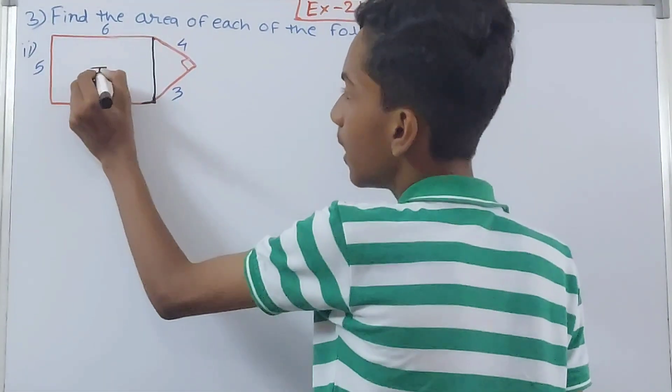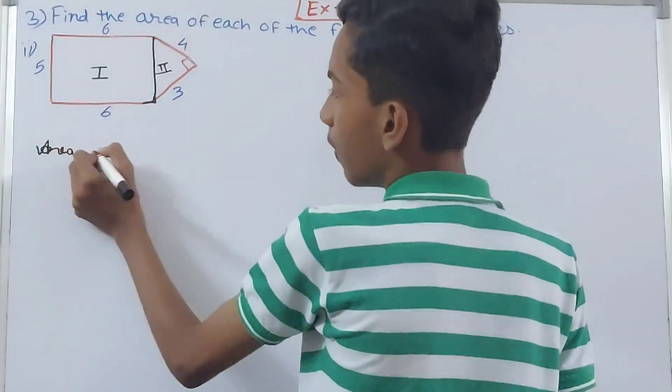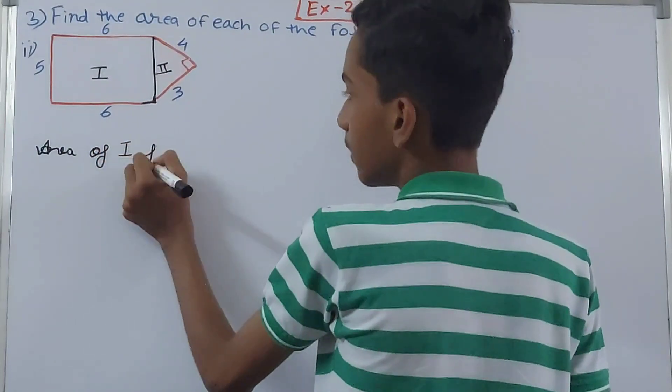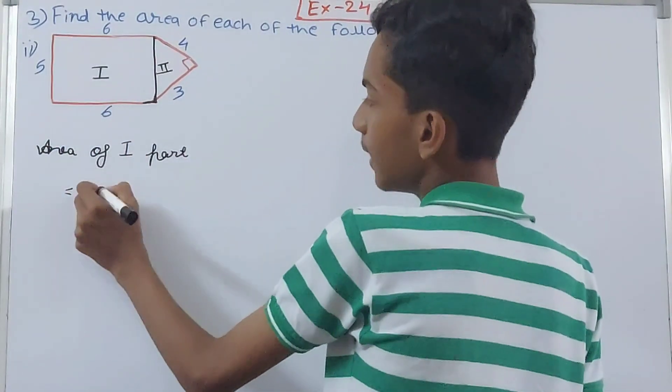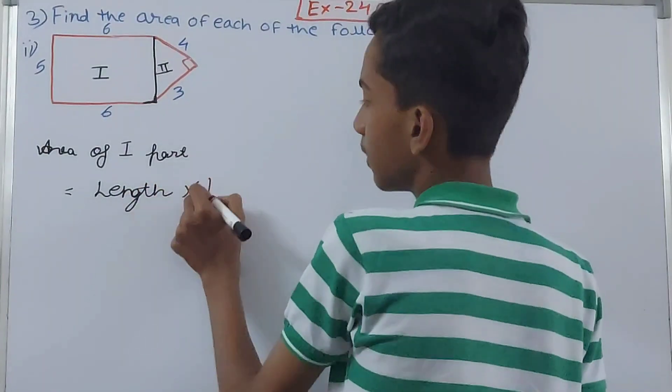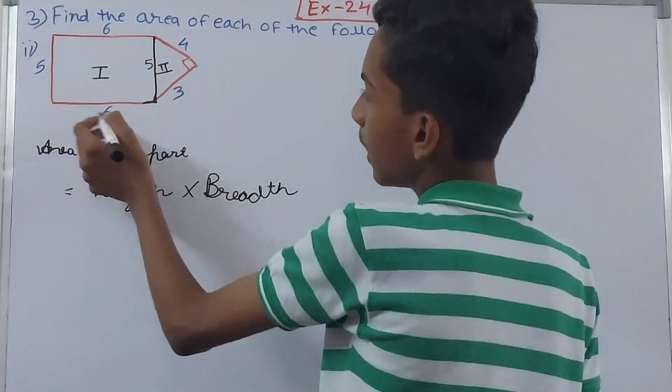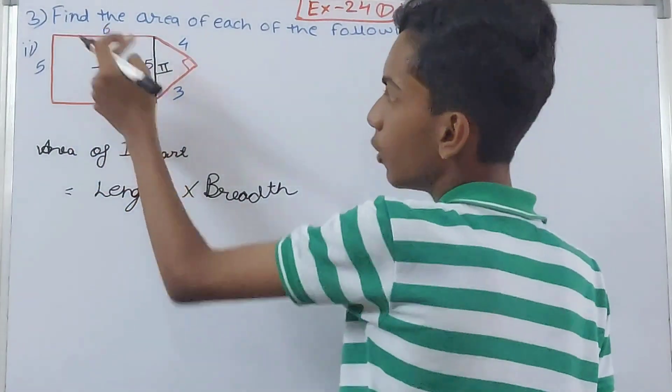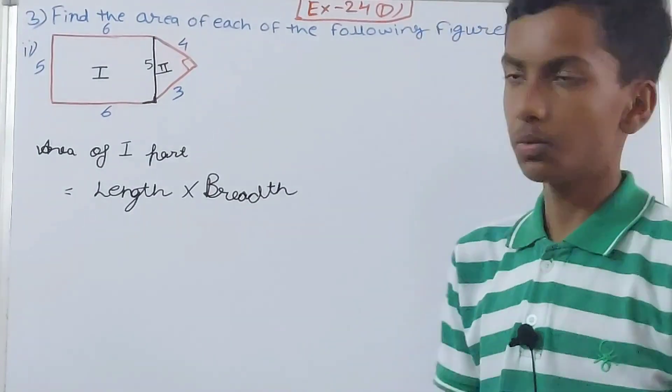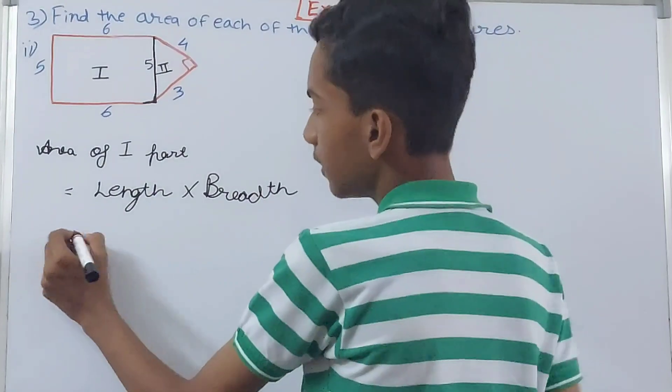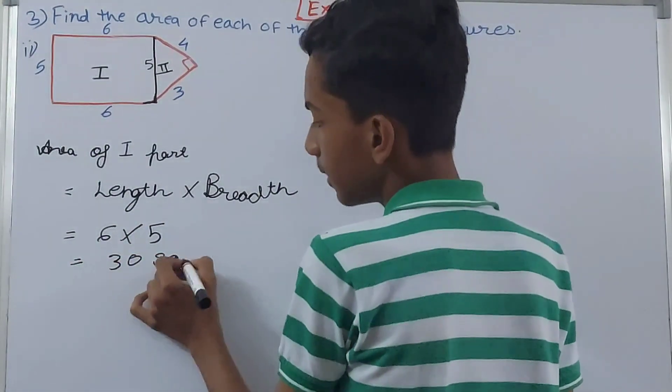So what we're going to do now is calculate the area. Let's keep this as first part and this one as the second part. Area of the first part, this is length into breadth. 5 and 5 here, and 6 and 6 here. If this is 6, the side opposite to it is also the same length because that is the property of rectangles, that opposite sides are always equal. So length into breadth will be 6 into 5, and that will be 30 square units.